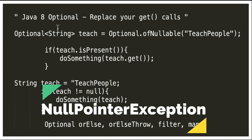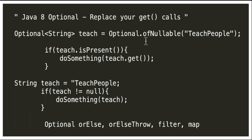If you look at this example, I created an Optional object of String and then I'm checking if it is present, then do something using the get method. Before introducing Optional we had a similar null-check syntax — there is no difference between the two. So what I'm trying to say is we don't have to always use the get method.